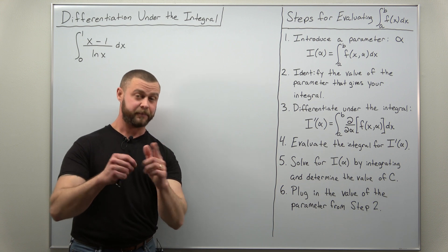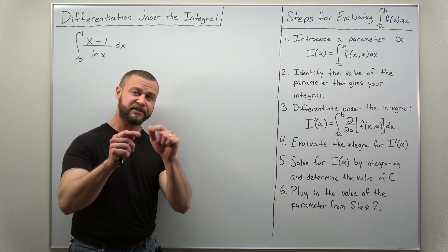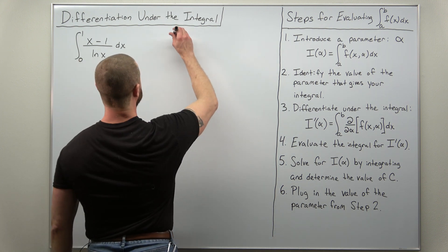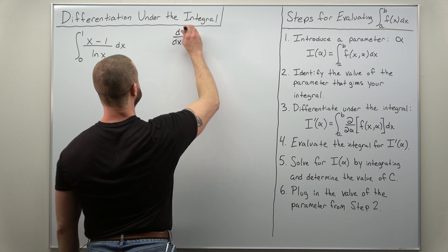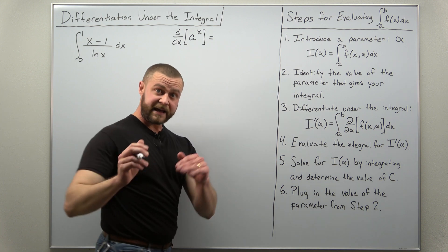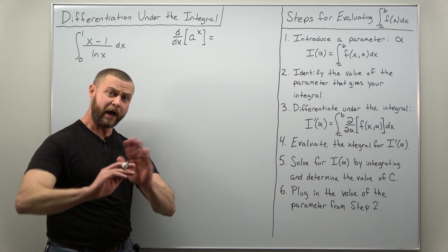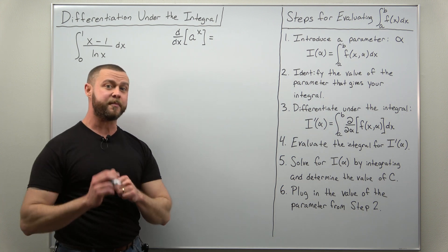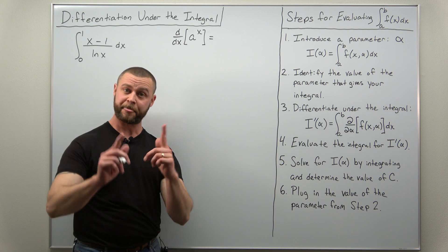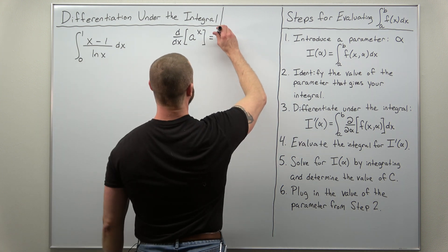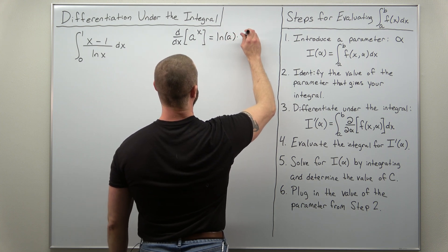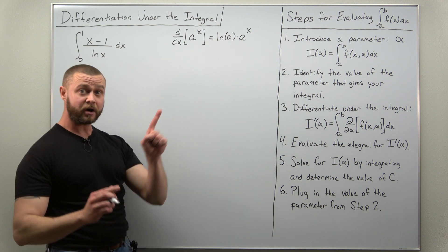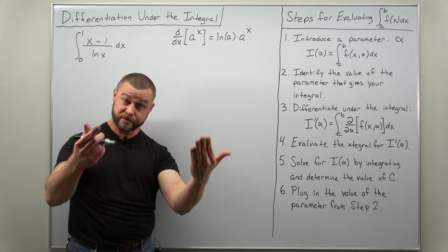Let's go back to Calculus 1 to see how we might introduce our parameter, starting with a basic derivative formula. The derivative with respect to x of a to the x: every calculus student knows the derivative of e to the x is e to the x, but for another base number like 2 or 3, you get natural log of the base times the exponential function.